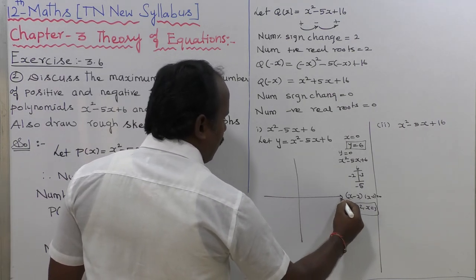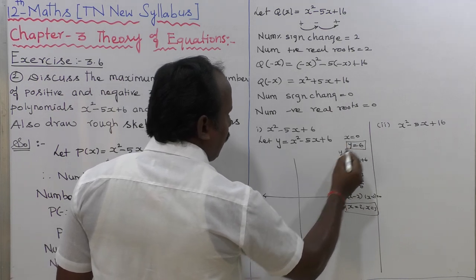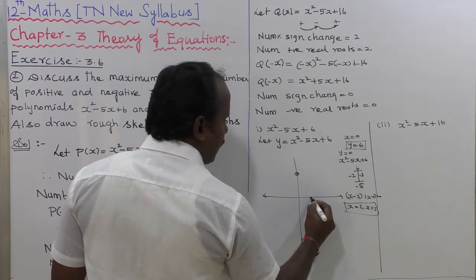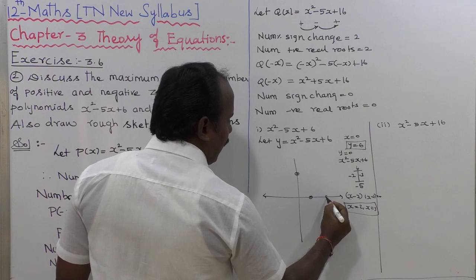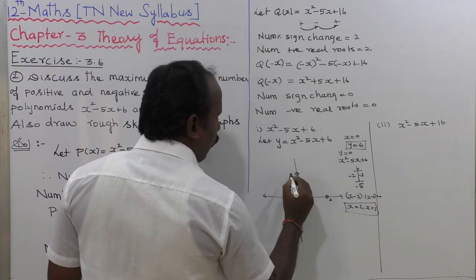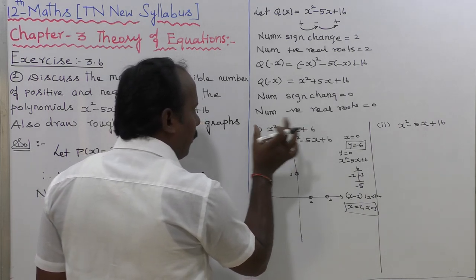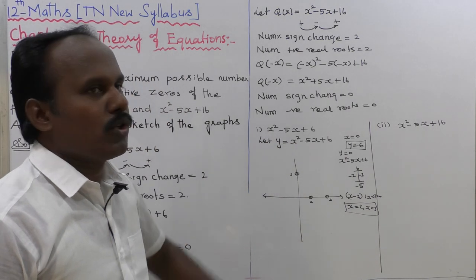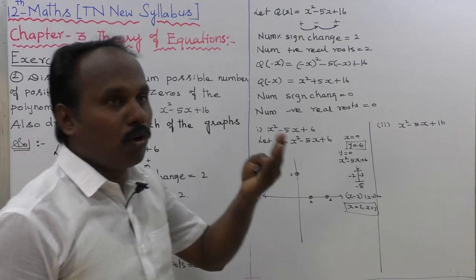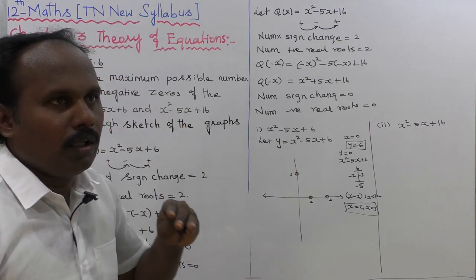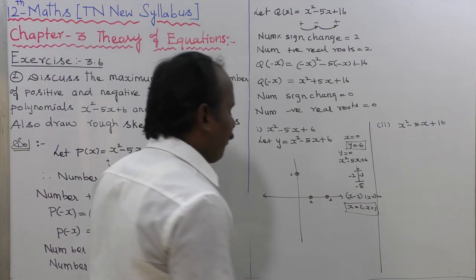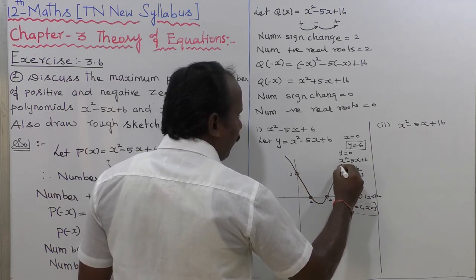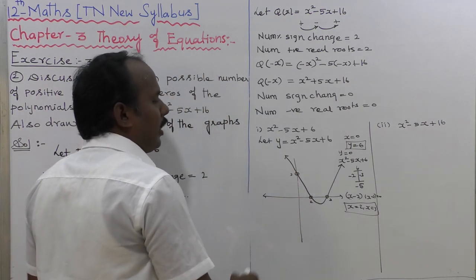On the graph sheet, we mark y equal to 6 as a positive value on the y-axis, and x equal to 2 and x equal to 3 on the x-axis. The parabola passes through these points — the y-intercept at 6 and the x-intercepts at 2 and 3. This gives us an upward-opening parabola, which is the rough sketch for p of x.